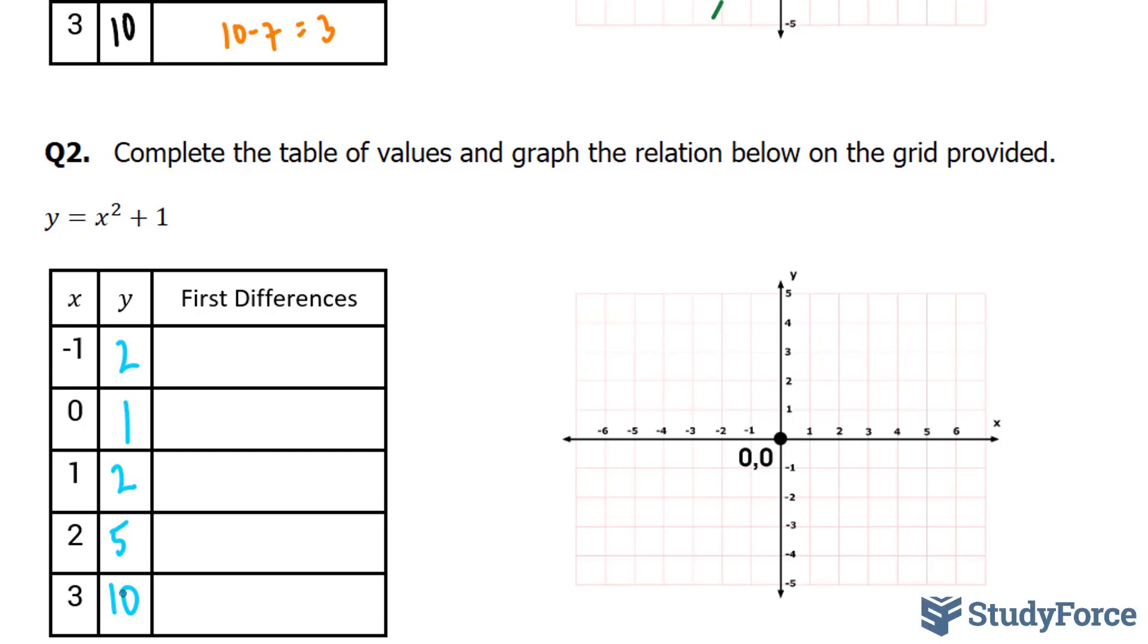So I'm going to graph these points. Negative 1 and 2 is up here. 0 and 1 is over here. 1 and 2 is over here. 2 and 5 is up here. And lastly, 3 and 10 is going to be all the way up here.